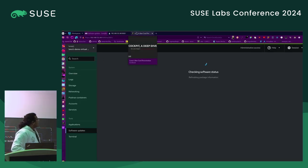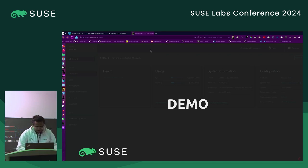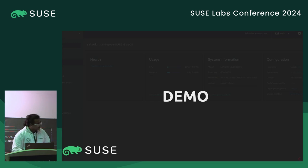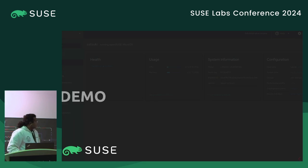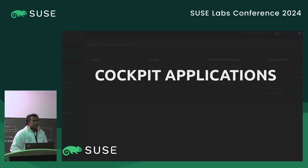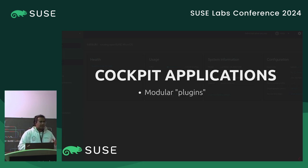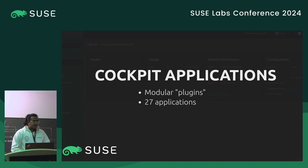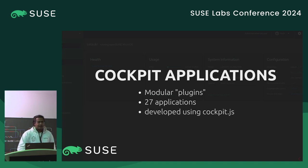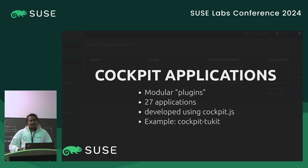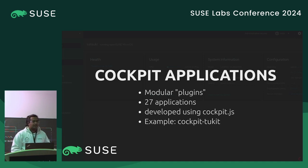So software update is still loading PackageKit. Cockpit applications are what we would think of as plugins — they can pretty much do anything if you can program them to do that. There are currently 27 applications that you can use in Cockpit. They're developed using cockpit.js. A good example is cockpit-tukit, a plugin we wrote to work with transactional systems and basically do what the software updates thing does for Tumbleweed.